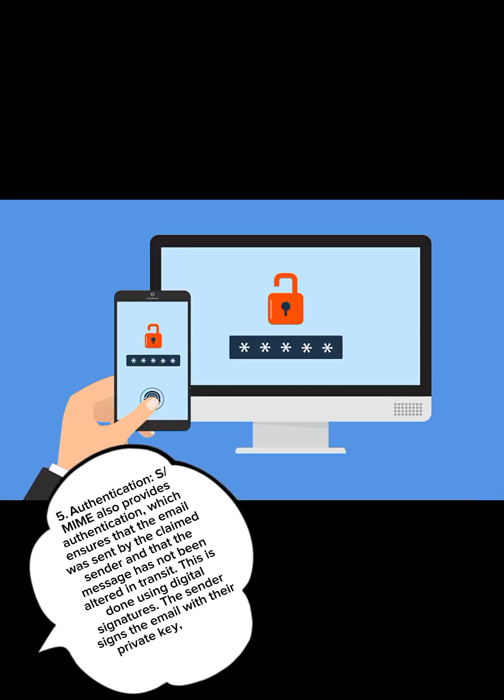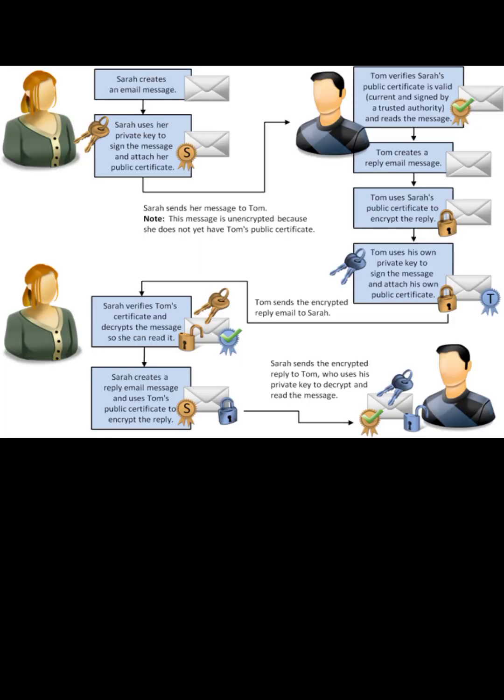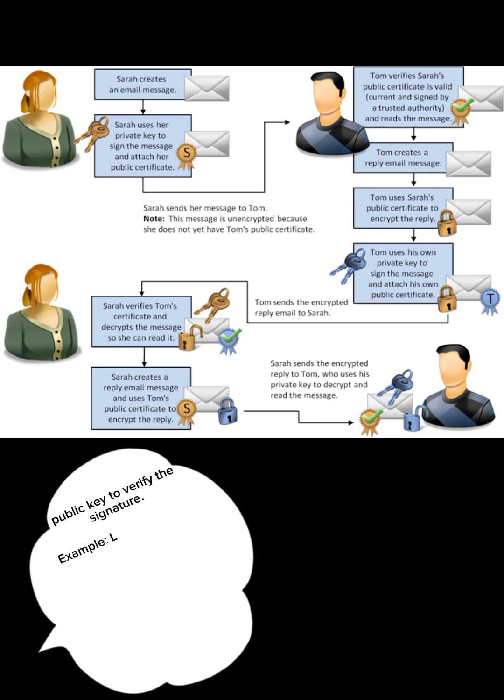5. Authentication: S-MIME also provides authentication, which ensures that the email was sent by the claimed sender and that the message has not been altered in transit. This is done using digital signatures. The sender signs the email with their private key, and the recipient uses the sender's public key to verify the signature.